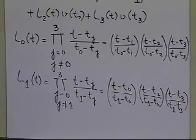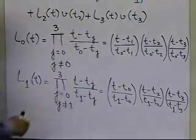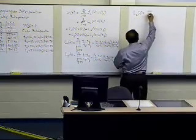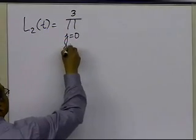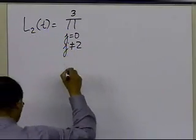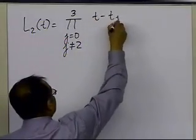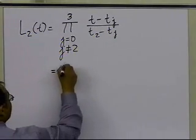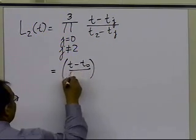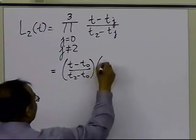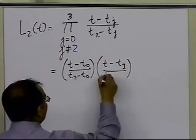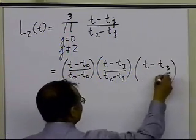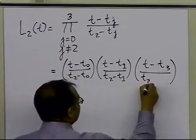We need to find two more weights: L2(t) and L3(t). L2(t) is the product from j=0 to 3 with j ≠ 2 of (t − t_j)/(t2 − t_j). Expanding: [(t − t0)/(t2 − t0)] · [(t − t1)/(t2 − t1)] · [(t − t3)/(t2 − t3)], since j=2 is skipped.